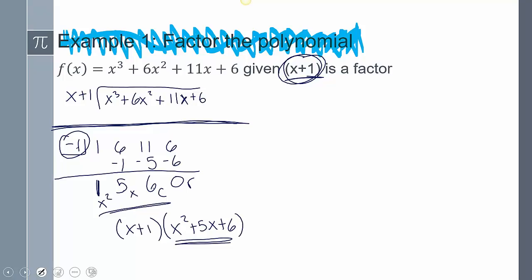Now we have to ask ourselves, does that factor further? Well, yeah, it does. That's actually a quadratic equation. I can factor that using the ways we know how to factor a quadratic equation. And so that'll factor into x plus 3 and x plus 2. So this polynomial f of x, I factored that into x plus 1 times x plus 3 times x plus 2.